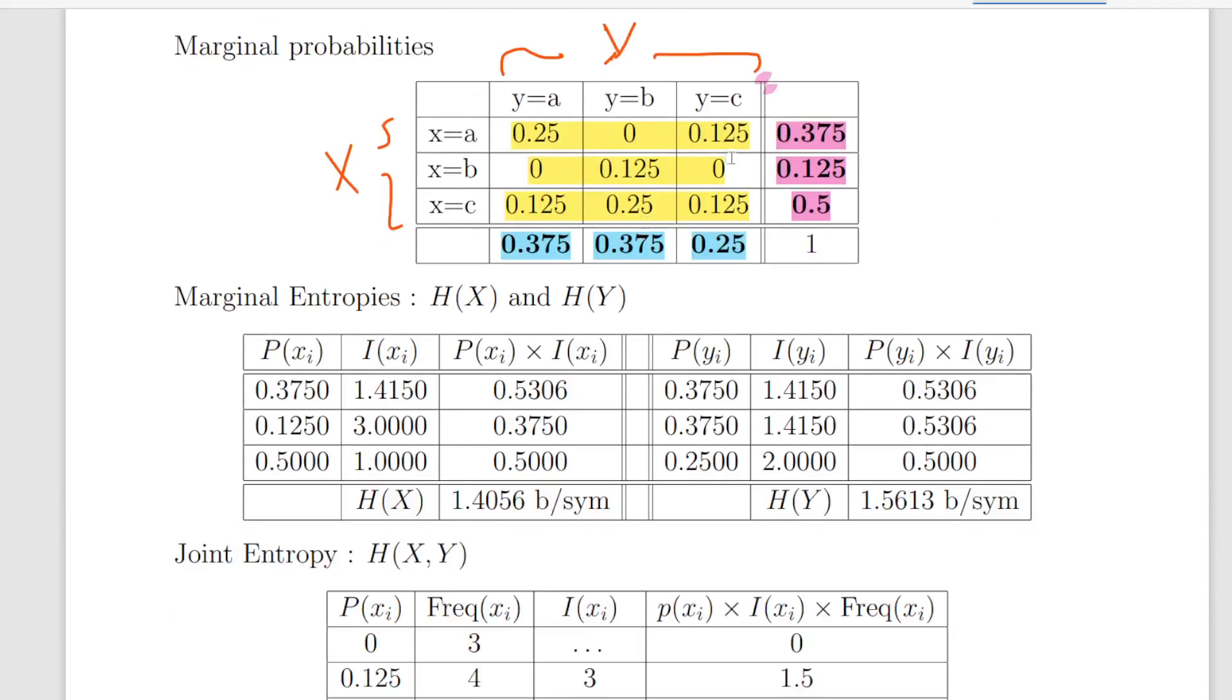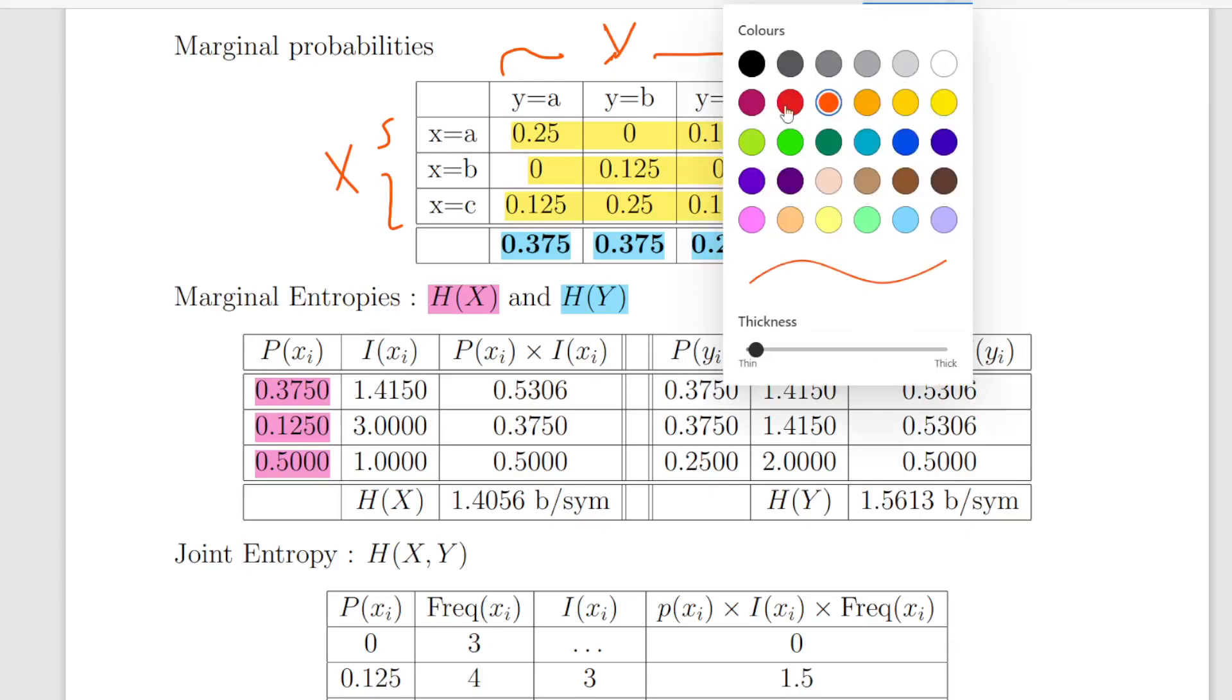So this will help us calculate the marginal entropies. I'm going to sort of split it up into two parts here. So first off I'm going to do the entropy of X, H(X) which is marginal entropy. What I'm going to do here is assign the marginal probability values that I have just calculated. And then I am going to calculate the information associated with each of these probabilities.